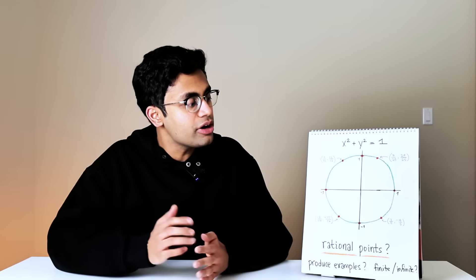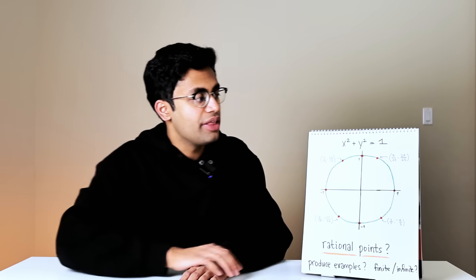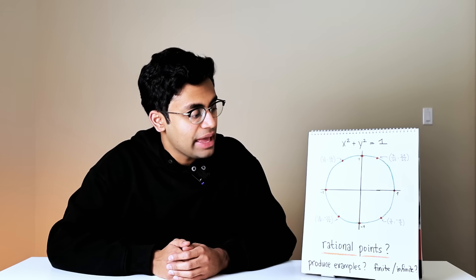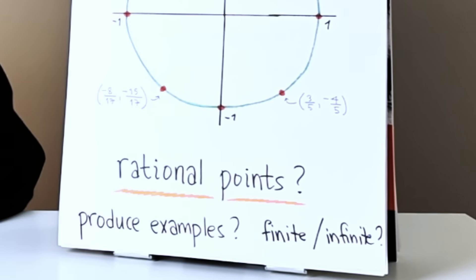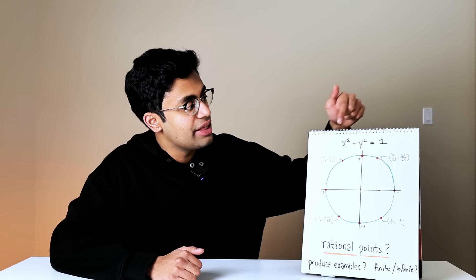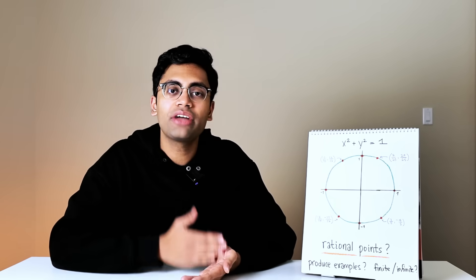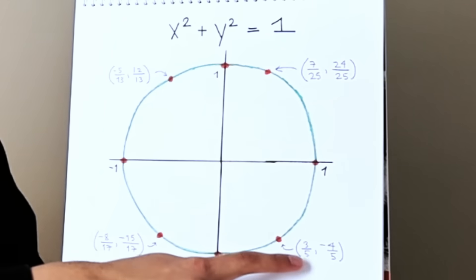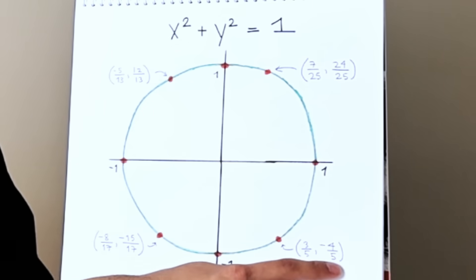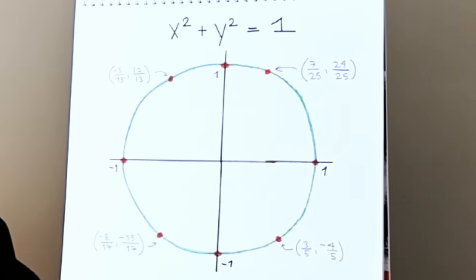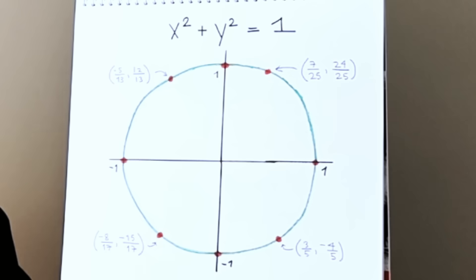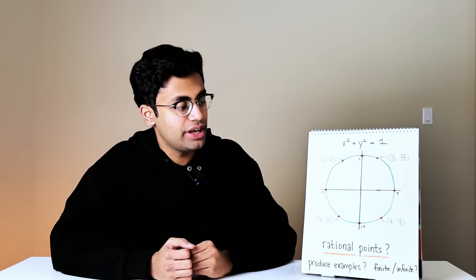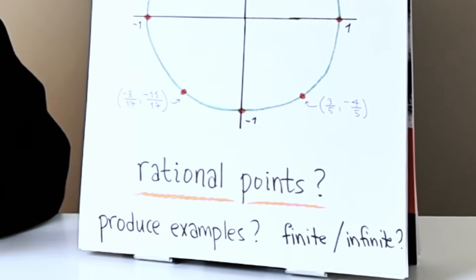The story starts with something deceptively simple: a circle. Here I've drawn the circle x squared plus y squared equals one, the unit circle in the xy plane. I'm going to ask a very simple question: what are the set of all rational points on the circle? A rational point is a pair x comma y that satisfies this equation such that both x and y are rational numbers. For example, 3 comma 5, or minus 4 comma 5, or minus 5 over 13, 12 over 13.